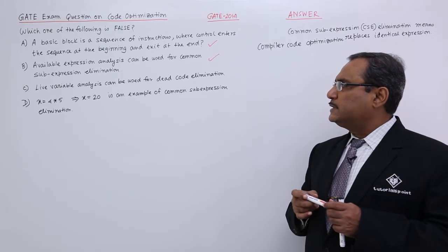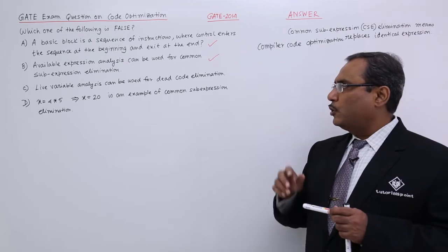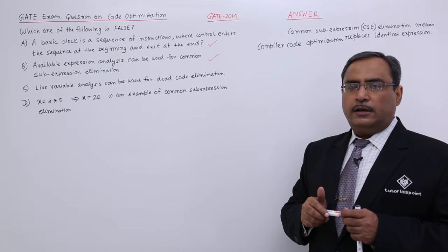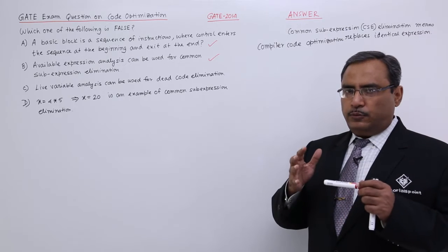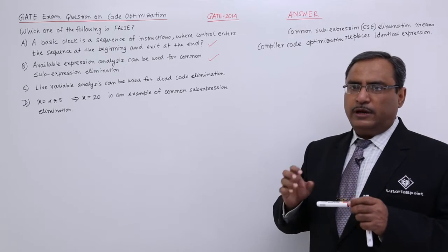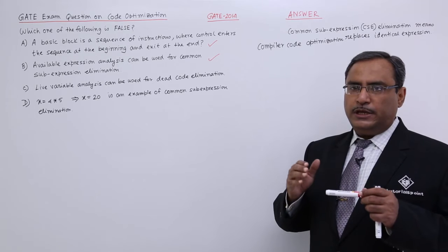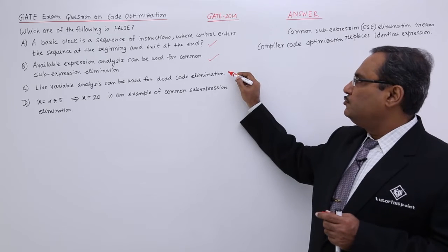Live variable analysis can be used for dead code elimination. That is also very much important because in our directed acyclic graph or in case of data flow analysis, we analyze that what is the scope of a certain variable and which variable has got dead, will not be used, cannot be used further and so on. So this particular statement is true.